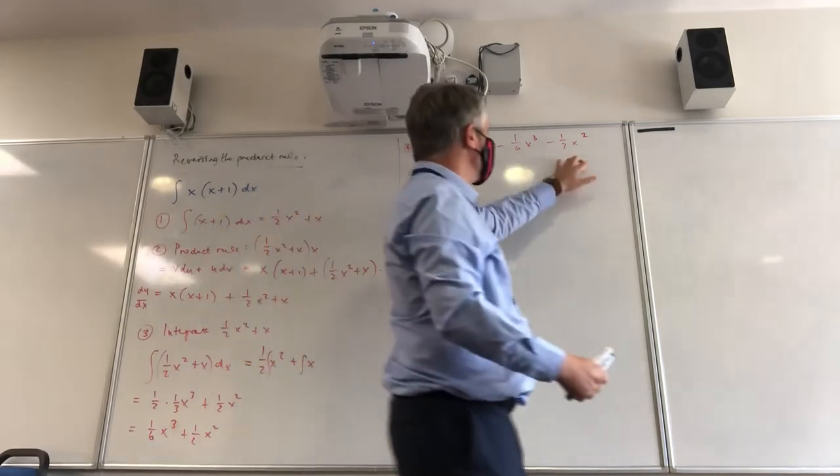That's a sixth x cubed plus a quarter x squared. Our final answer is going to be what we have here. So stage number four is going to be a half x squared plus x times x minus what we've just got, a sixth x cubed minus a quarter x squared. And that's our final answer for the integral of x times x plus one. And how can I check that? To double check this, if I differentiated that, I should get that. So the reverse should be true.